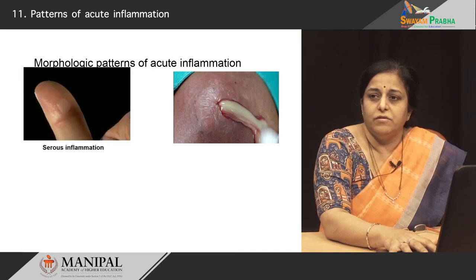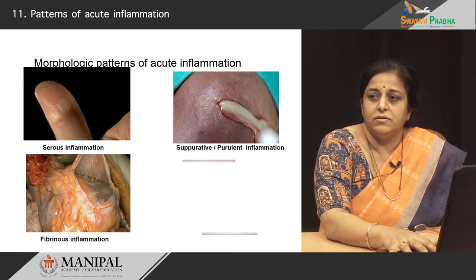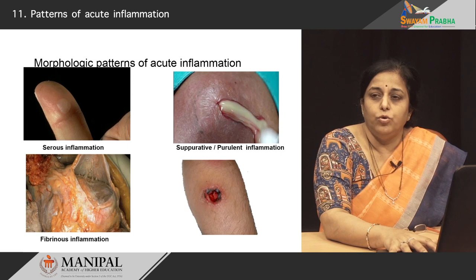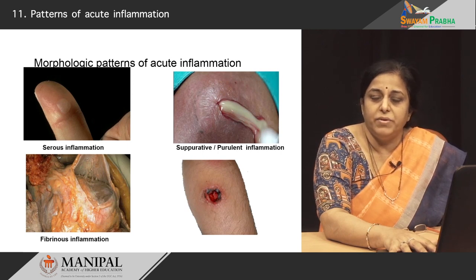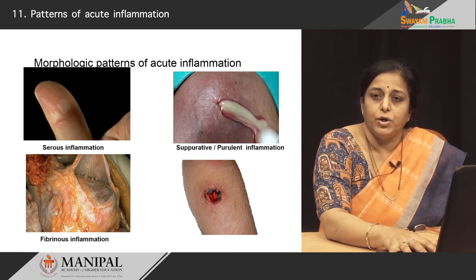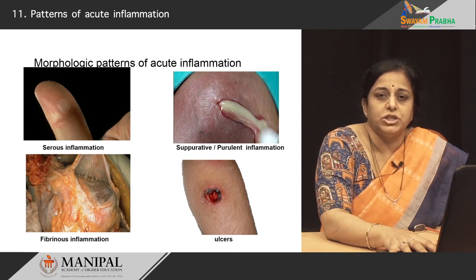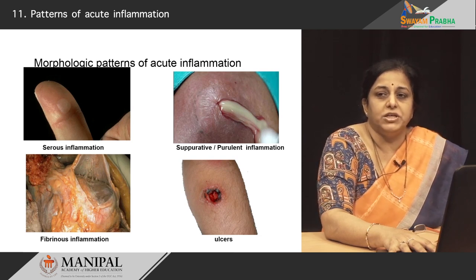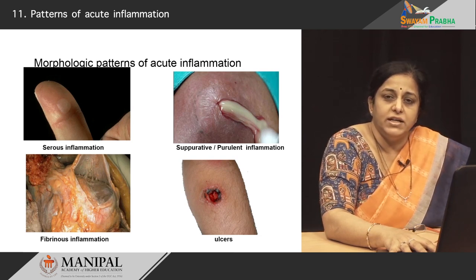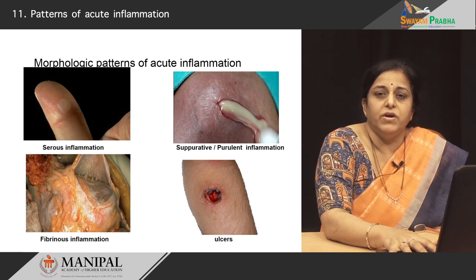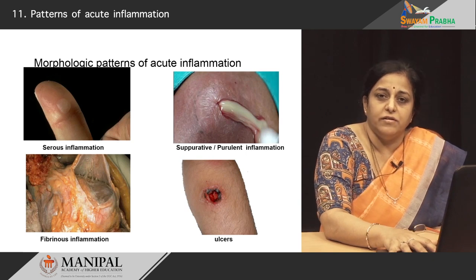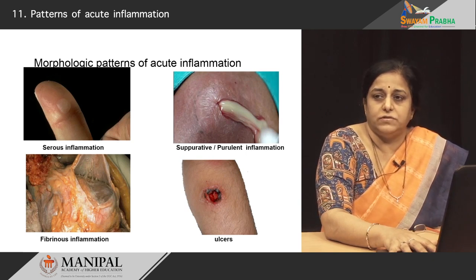These are the four types: serous inflammation, fibrinous inflammation, suppurative inflammation where you have pus, or ulceration. All these are different morphological appearances of inflammation in various tissues when there is injury by various different kinds of agents.